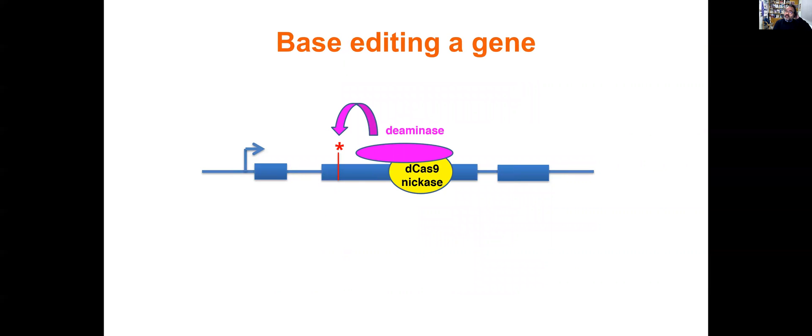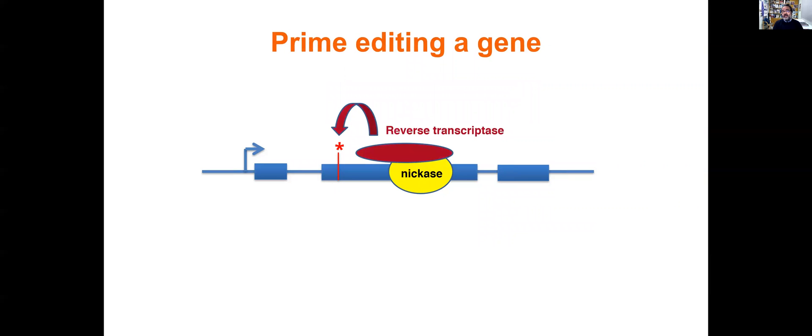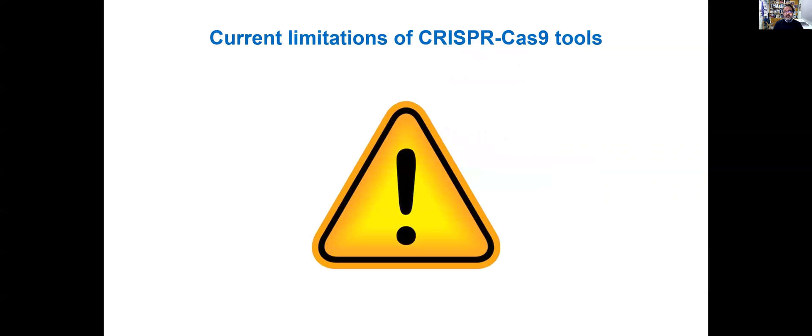You can base-edit a gene by combining an activity, in this case deaminase, that can change a C into a T or an A into a G. And the latest version that we have known about this CRISPR-Cas system is prime editing, in which a reverse transcriptase is used to be bound with a Cas that is cutting only one strand of DNA and promoting the conversion of nucleotides in the opposite strand.